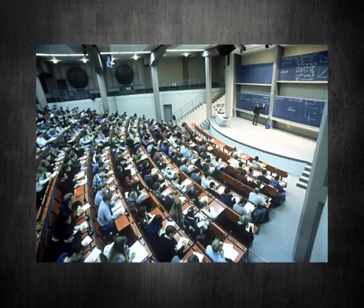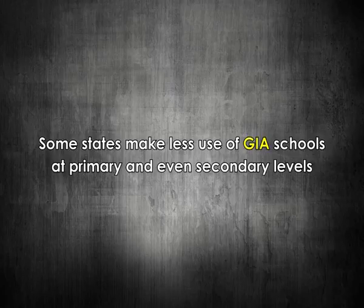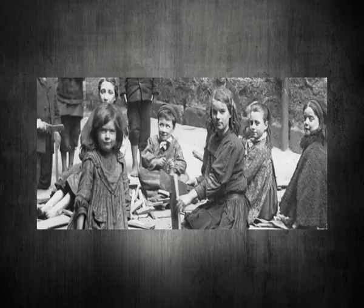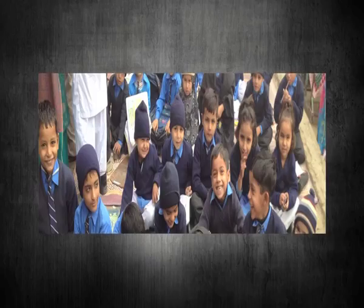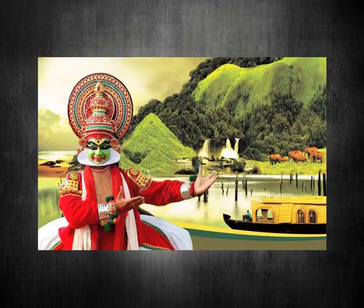Distribution and service of GIA institutions is uneven in terms of equity, number, enrolment of students, and level of education across different states. Marginalised sections rarely go beyond the primary level of education, and in states like Odisha, the GIA system almost excludes the primary level, meaning zero participation of lower groups. Some states make less use of GIA schools at primary and secondary levels, thereby minimizing the chances of the poor getting enrolled and proving more supportive to richer groups.